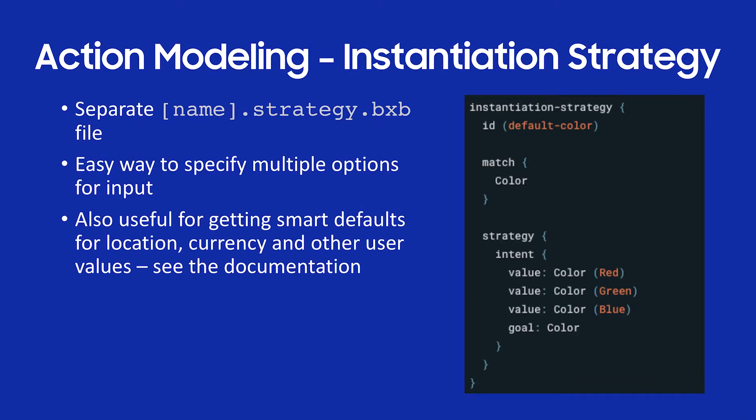Instantiation strategy: the use case here is I have a color I want the user to choose, but I want to limit it to red, green, or blue. When Bixby asks for the color, I want it to show a menu with those options. I create an instantiation strategy with an ID, match pattern, strategy intent, setting the values red, green, and blue with the goal being color. This constrains the input Bixby elicits from the user. It's also useful for smart defaults like location, currency, and other values.